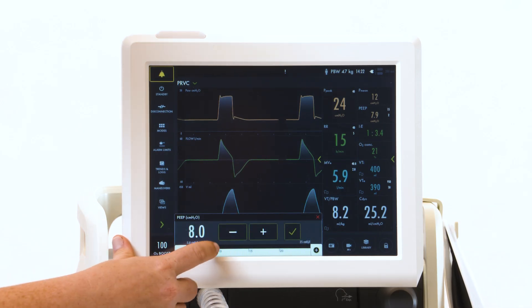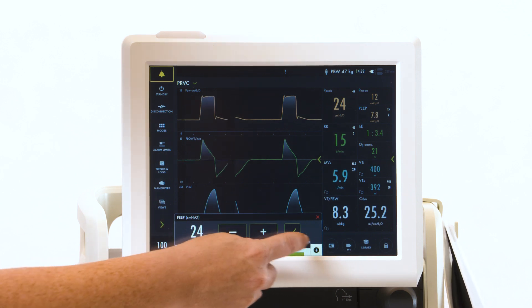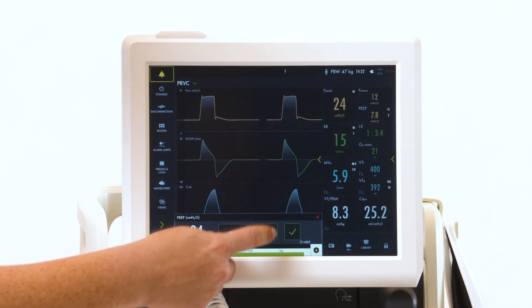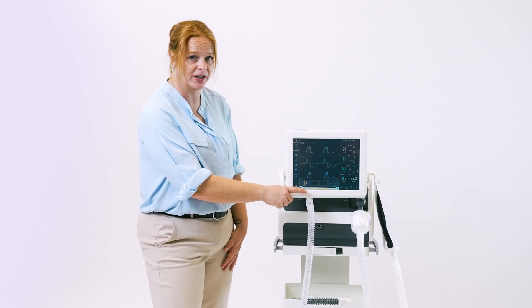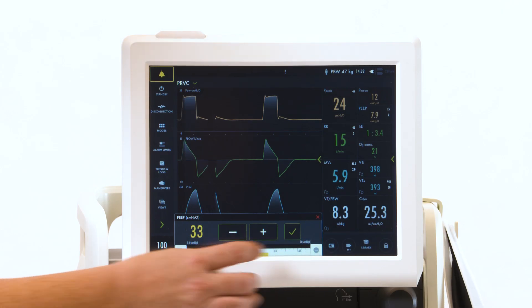Touch a setting. To make changes, you can slide along the bar or add and subtract. When you move beyond the default, the scale will turn yellow, alerting you. Press the plus sign if you would like to go beyond that.